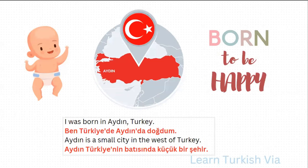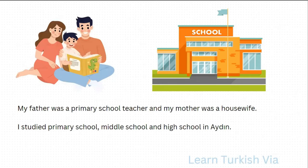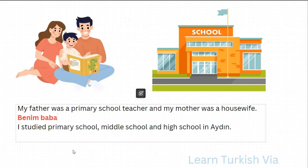Alright, let's continue. Here it says: My father was a primary school teacher and my mother was a housewife. So, my — benim, father — baba, my father — babam. Primary school — ilk okul. In Turkish, we don't say primary school, we say first school — ilk okul.